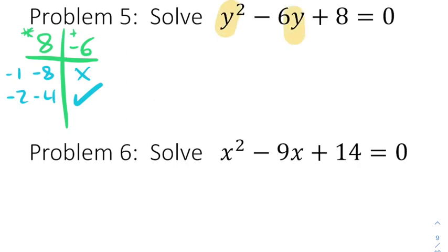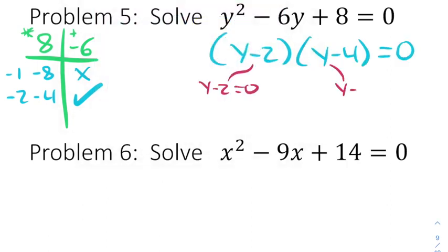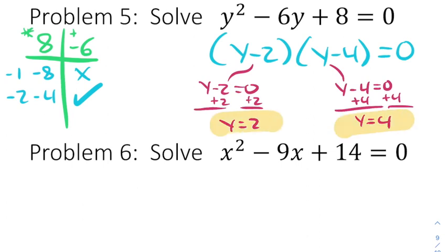Now don't get confused by the fact that we have y's for this problem. It's still going to work the same way. It's just going to be y minus 2 and y minus 4. And then we're going to use ZPP to set each of those factors equal to 0. And then we solve each one, getting answers of y equals 2 and y equals 4.